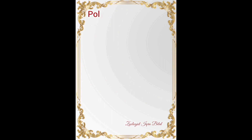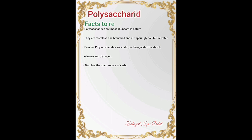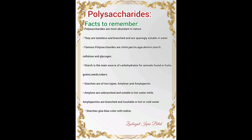Polysaccharides are the most abundant carbohydrates in nature. They are tasteless and branched, and are sparingly soluble in water. Famous polysaccharides include chitin, pectin, agar, dextrin, starch, cellulose, and glycogen. Starch is the main source of carbohydrate for animals, found in fruits, grains, seeds, and tubers.